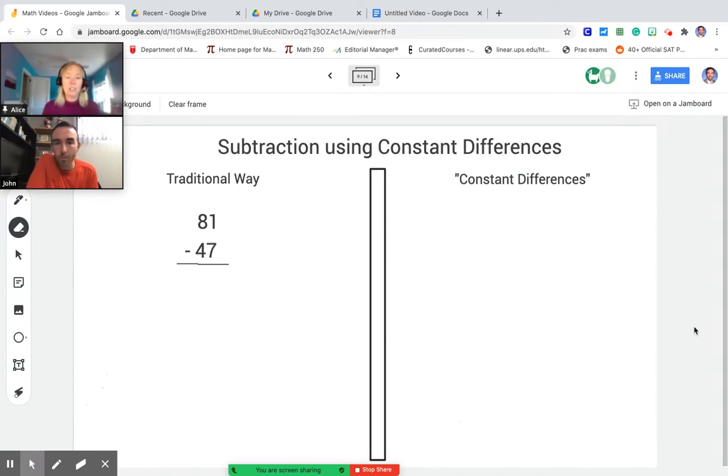So if I were going to do 81 minus 47, I would have to borrow a 1 from the 8 so that would become a 7. So now I'm doing 11 minus 7 which is 4 and then 7 minus 4 which is 3, so I get the answer of 34.